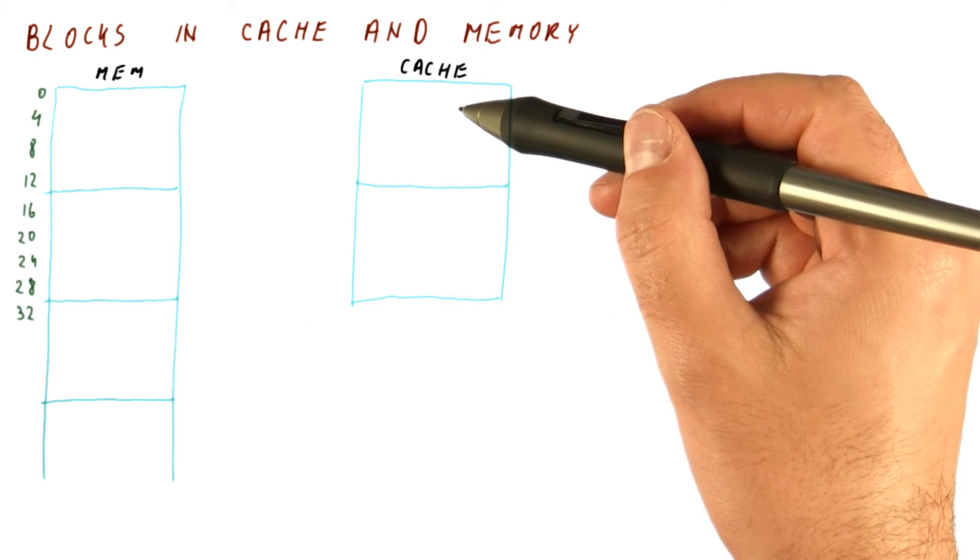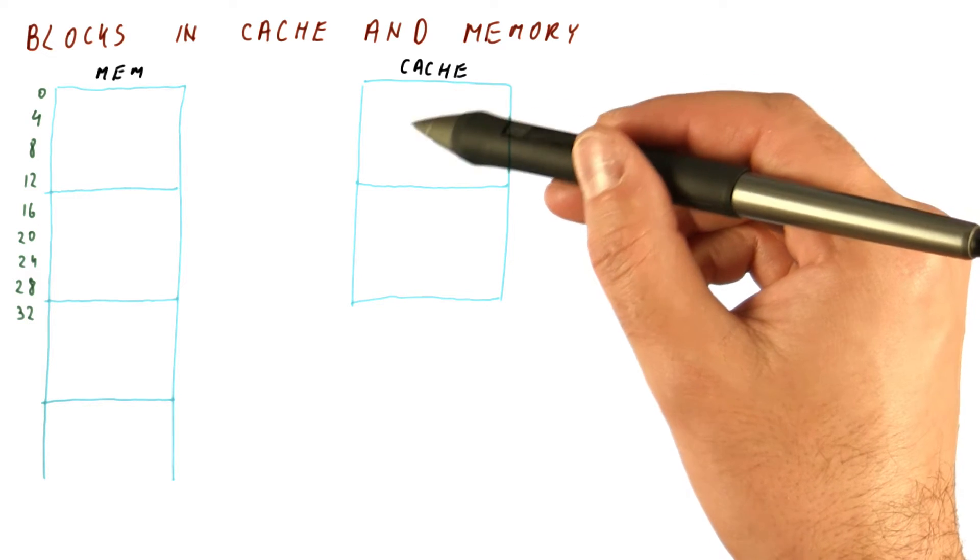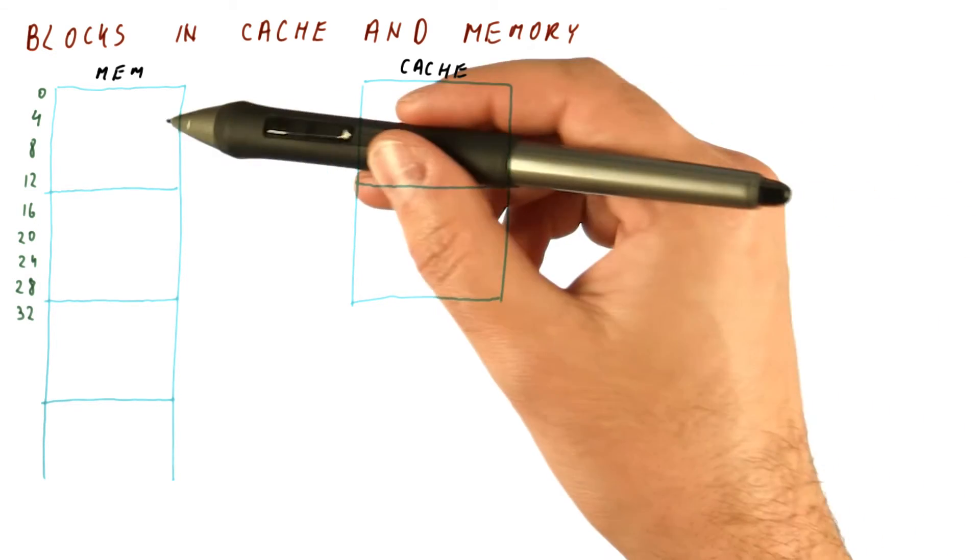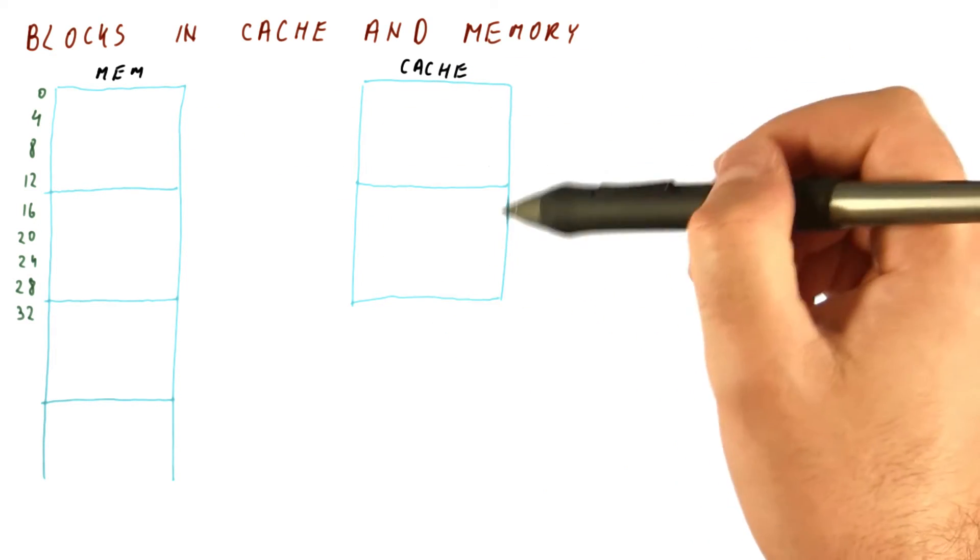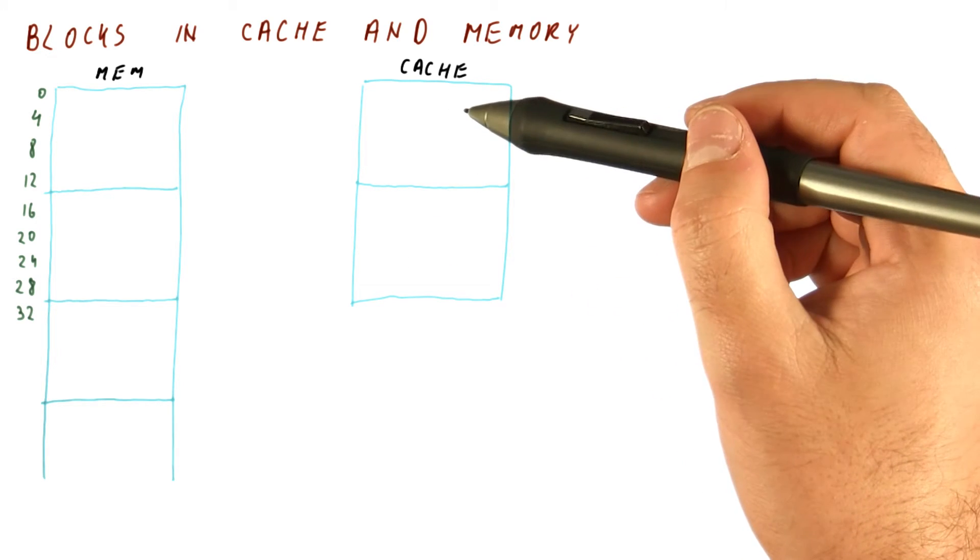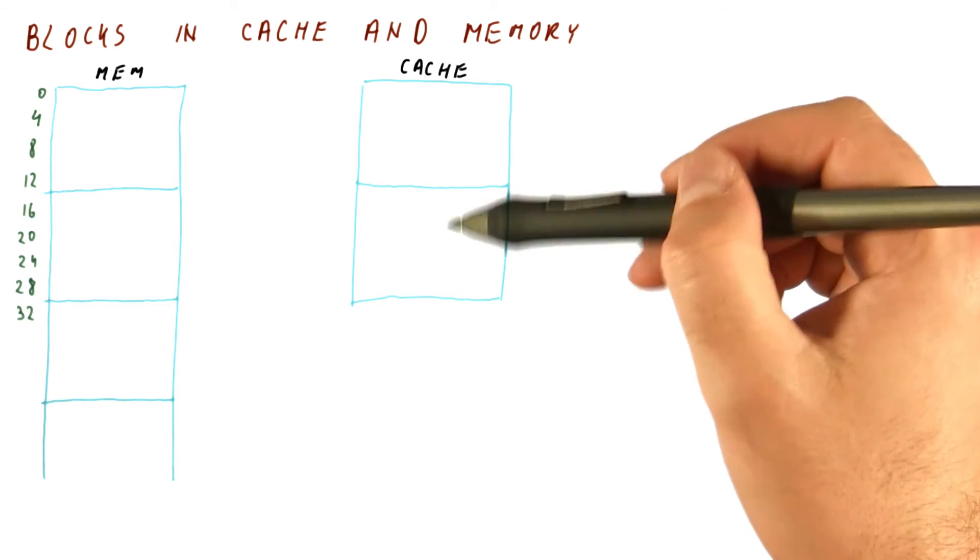A cache then can be considered to be a number of slots where a block can fit. In this case, we have just a two block cache. So the cache size is just equal to two block sizes.